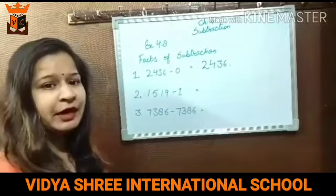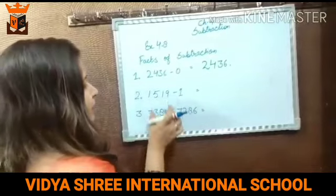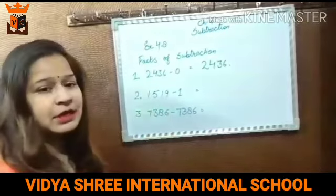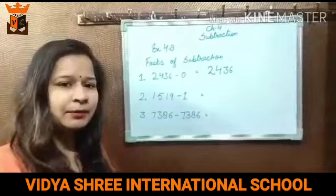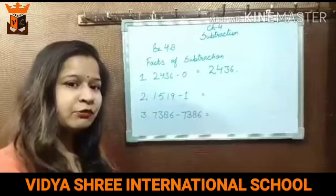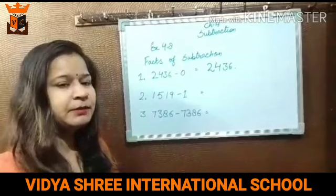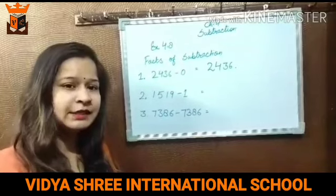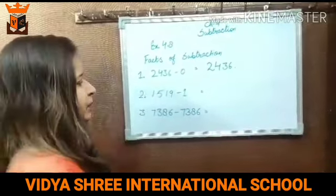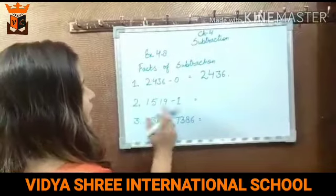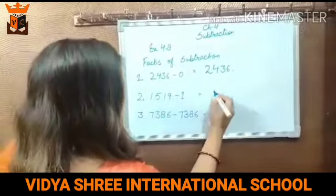It is the first fact of subtraction. The second fact is: when you subtract 1 from a given number, you get its predecessor. Jab hum kisi number me se 1 less karte ho, to aapko predecessor milta hai. Aapne chapter number 1 me bhi yeh para tha. Aur successor ke liye hum given number me 1 add karte hai.